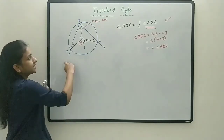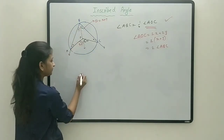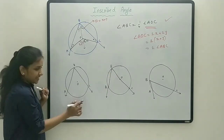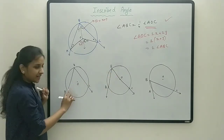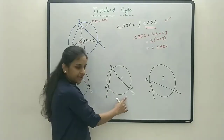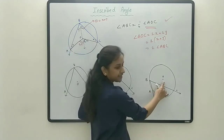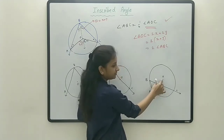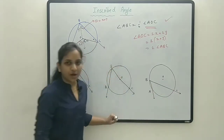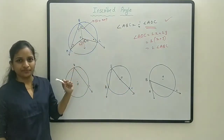The inscribed angle can appear in three cases: in the first case, the center of the circle lies inside the inscribed angle; in the second case, the center lies on the inscribed angle; and in the third case, the center lies outside the inscribed angle. In all three cases, this theorem holds true.